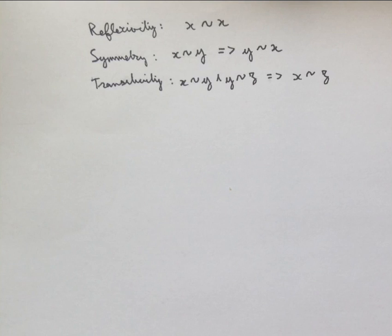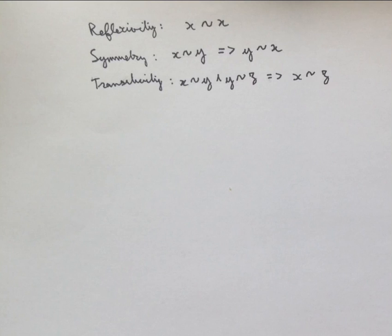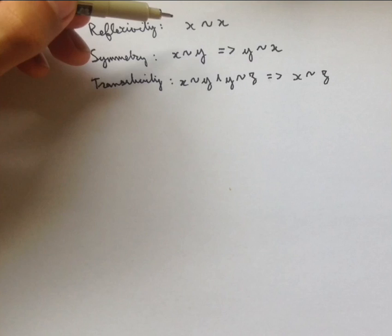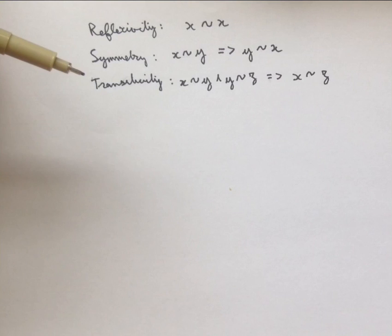Another example of an equivalence relation that we've seen more recently is the idea of things being of the same cardinality. For this, we use the word equinumerous. So x has the same cardinality as x, because we have a bijection from x to x, which is the identity function defined by f(a) = a for all a.